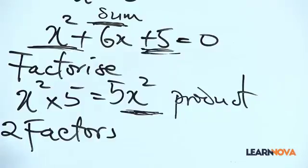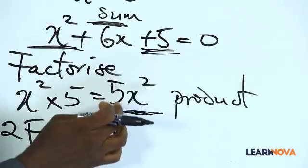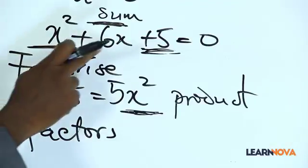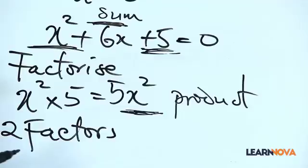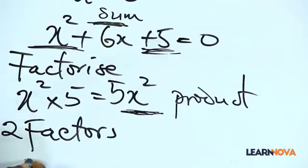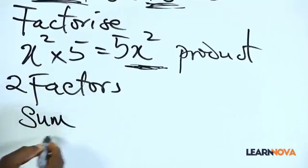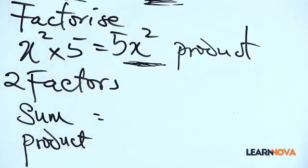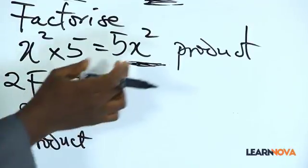What I first of all do is take this and multiply with the constant. That is why you can see that I underlined the first term there and the last term. When that is done, I'm going to get 5x squared. Now, I am going to look for two factors, such that what I just generated here is referred to as the product, while this expression here is regarded as the sum.